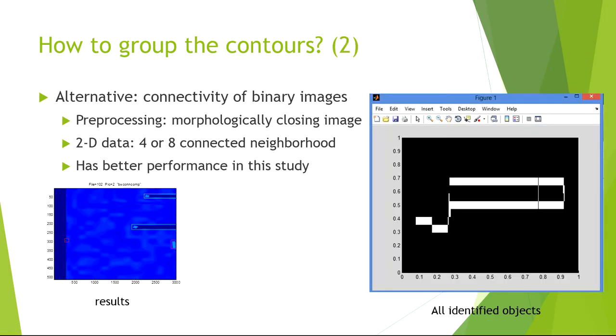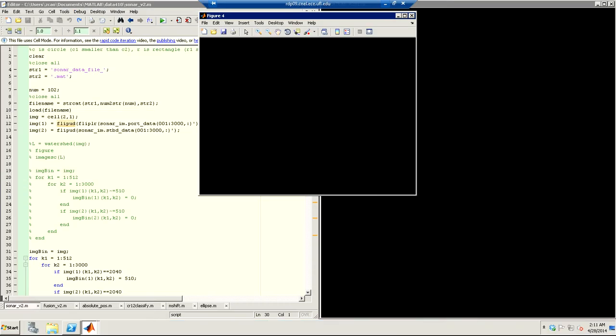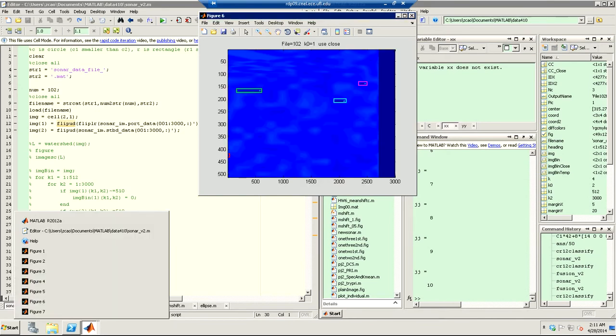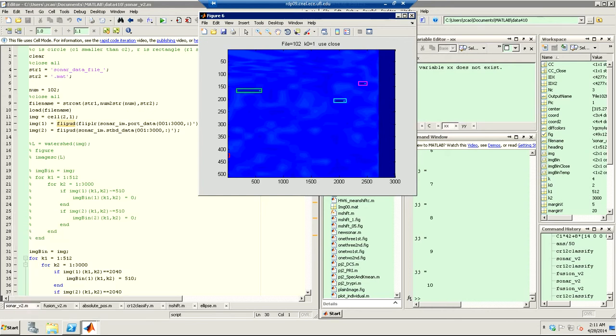In this study, we use a more heuristic solution, which is actually better. We can just find the connectivity of binary images like this. So this gives you perfect results.